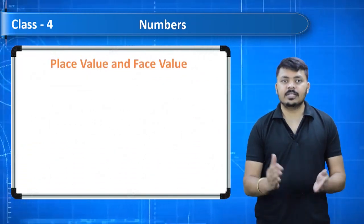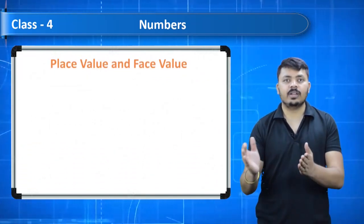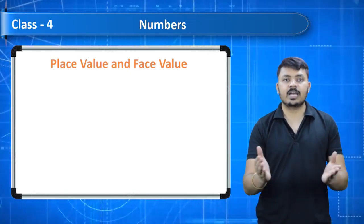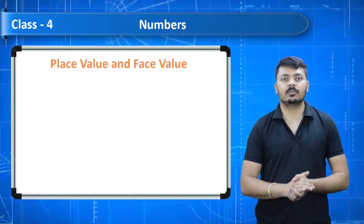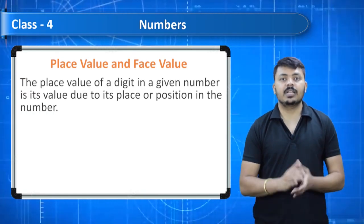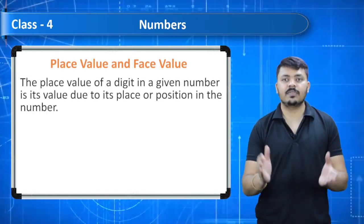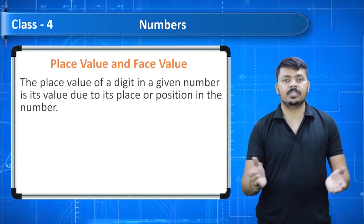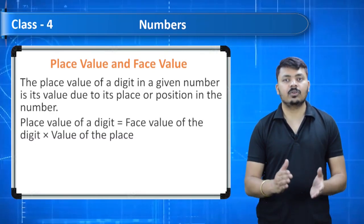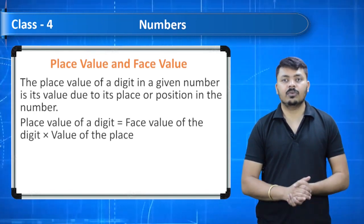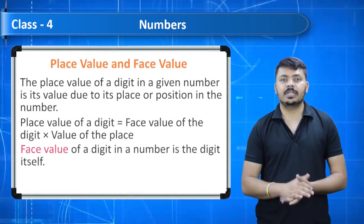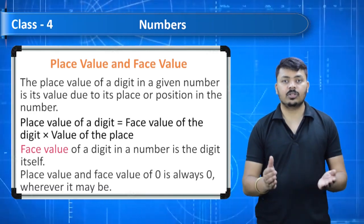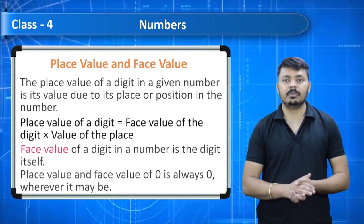Now let's learn about place value and face value. The place value of a digit in a given number is its value due to its place or position in the number. Place value of a digit equals the face value of the digit multiplied by the value of its place. The face value of a digit in a number is the digit itself. The place value and face value of 0 is always 0, wherever it may be.